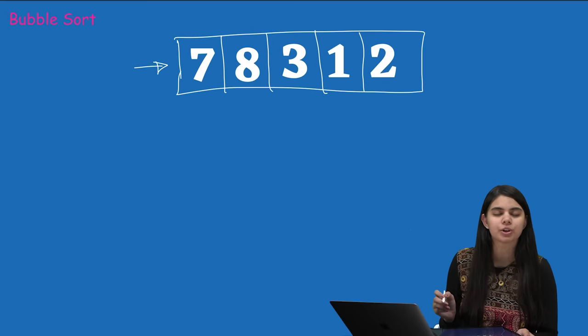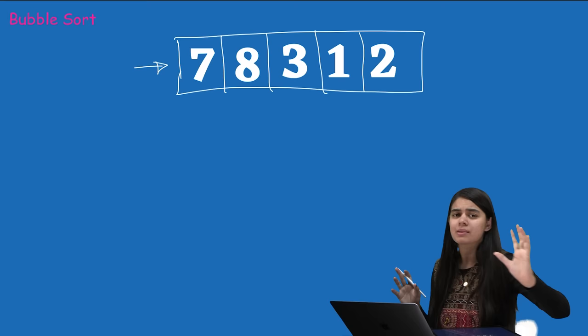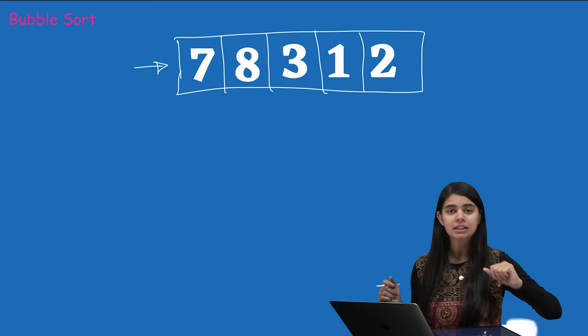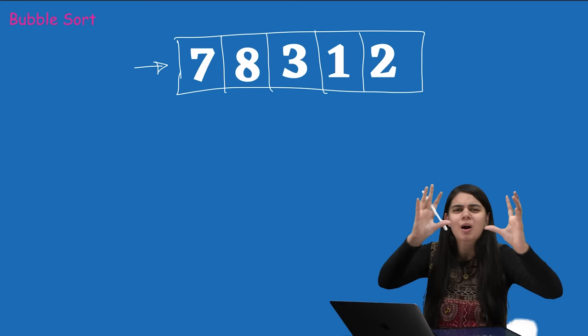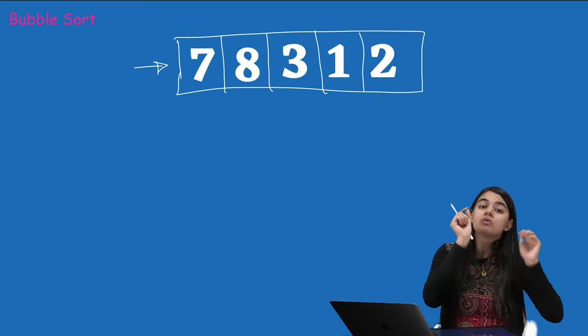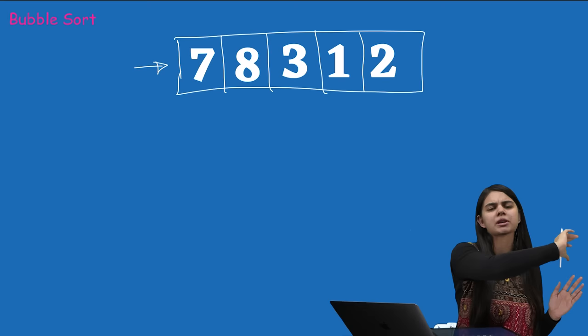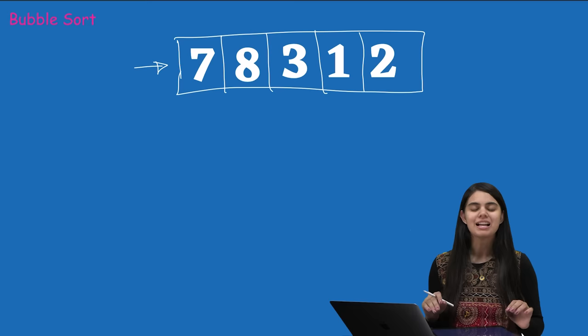What does bubble sort do? It runs a loop n-1 times. The first time the loop runs, it takes the largest element and places it at the end. The second time, it places the second largest at the second last position, and so on. After n-1 iterations, the smallest element is automatically placed at the beginning.